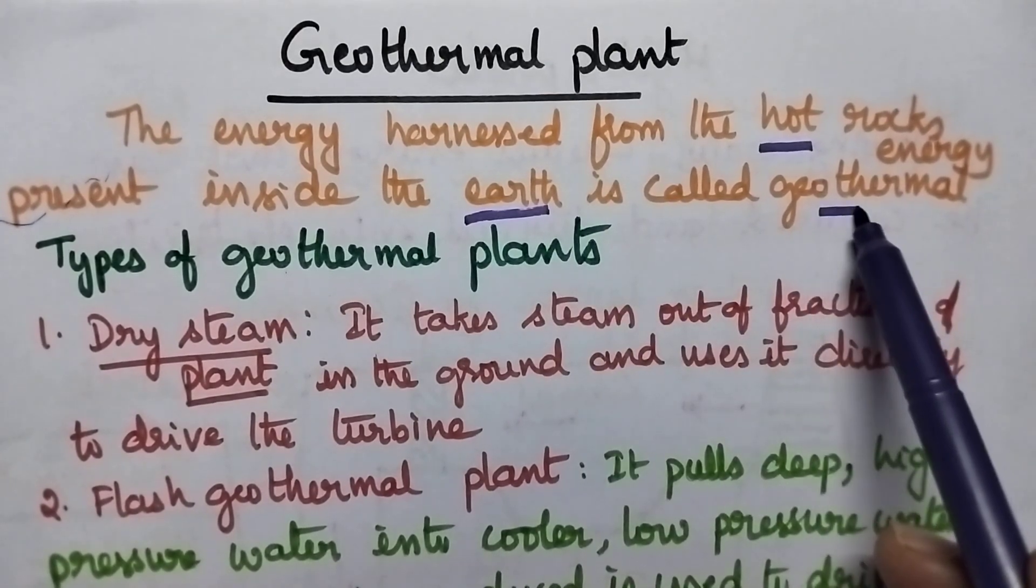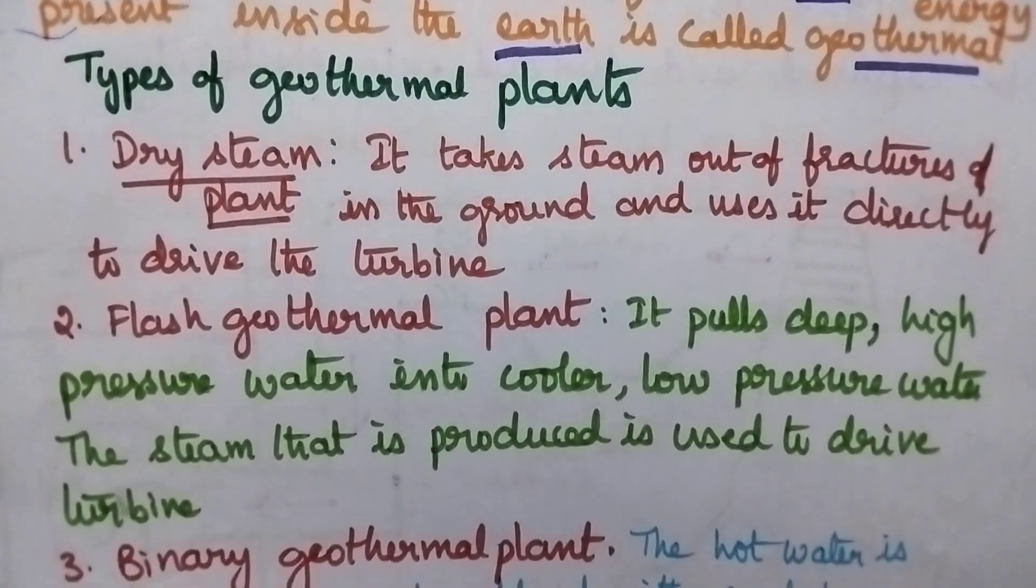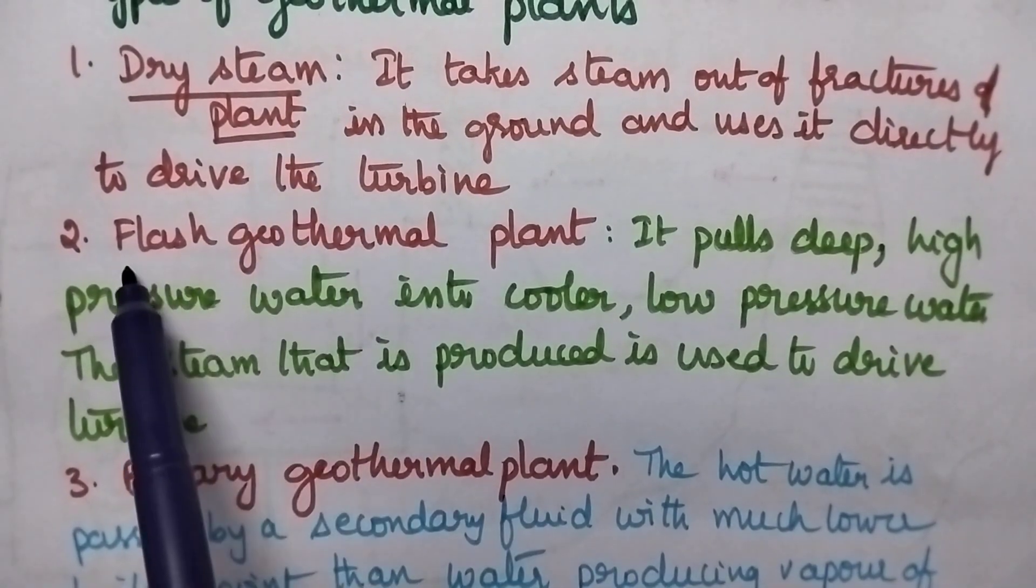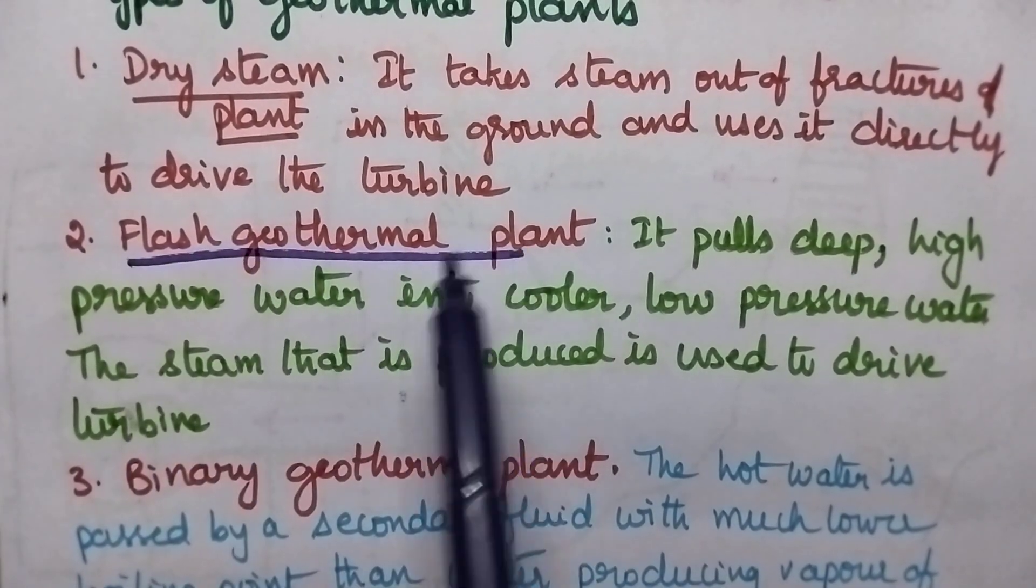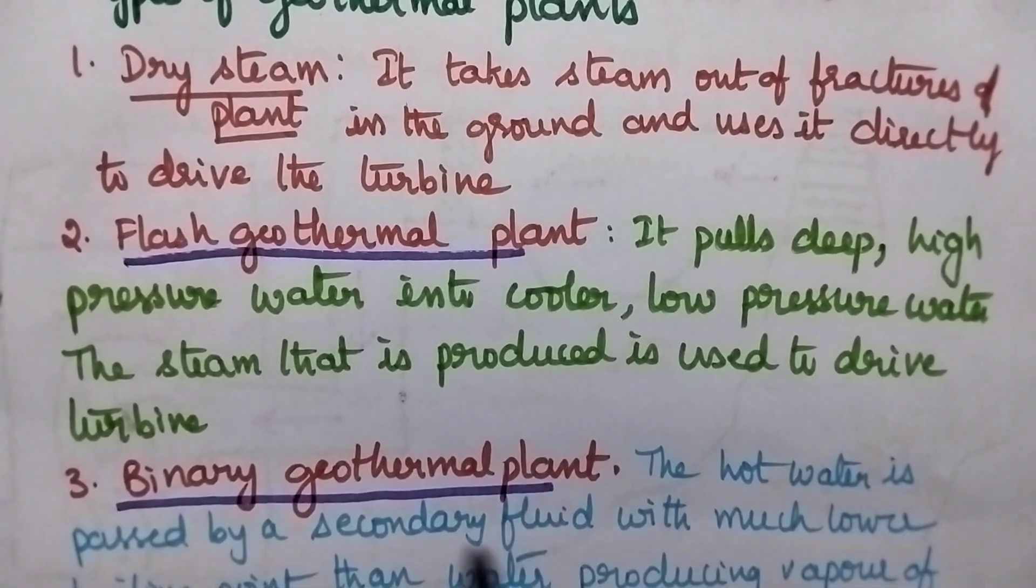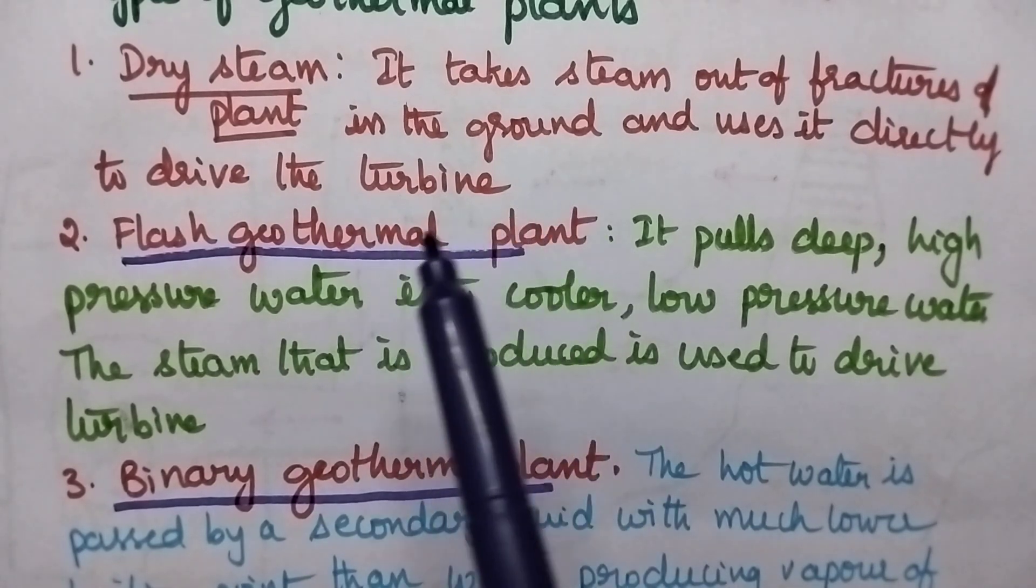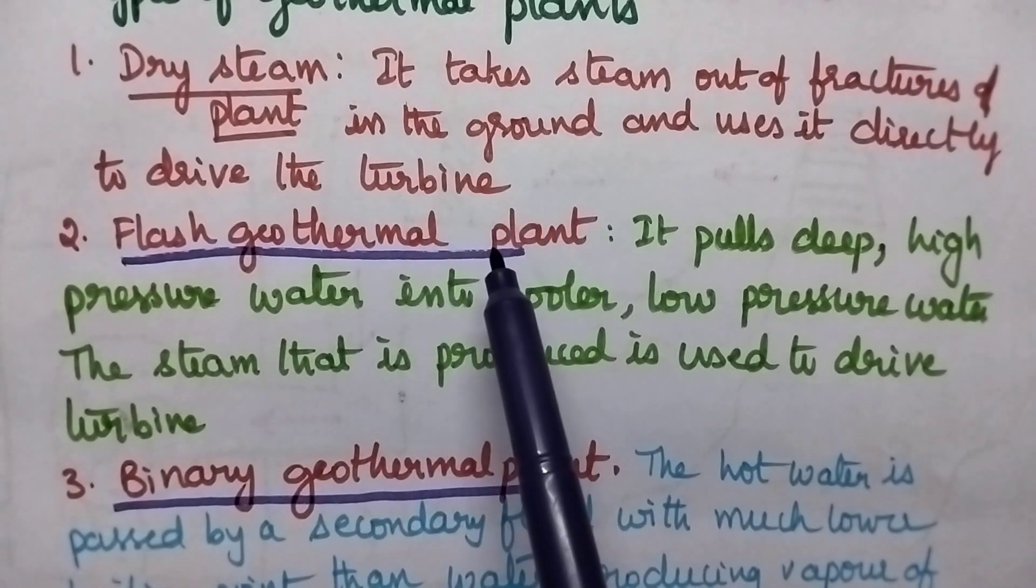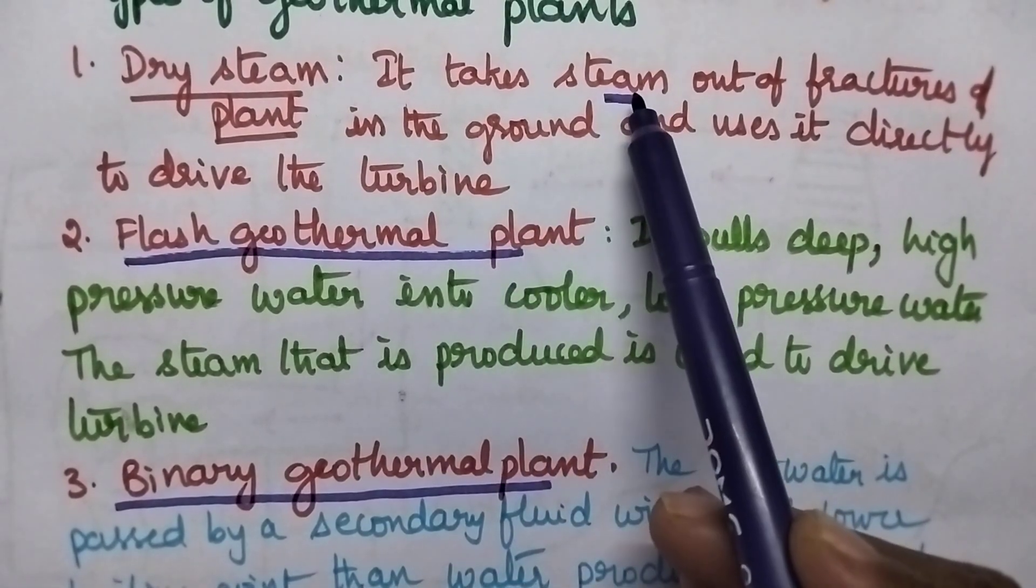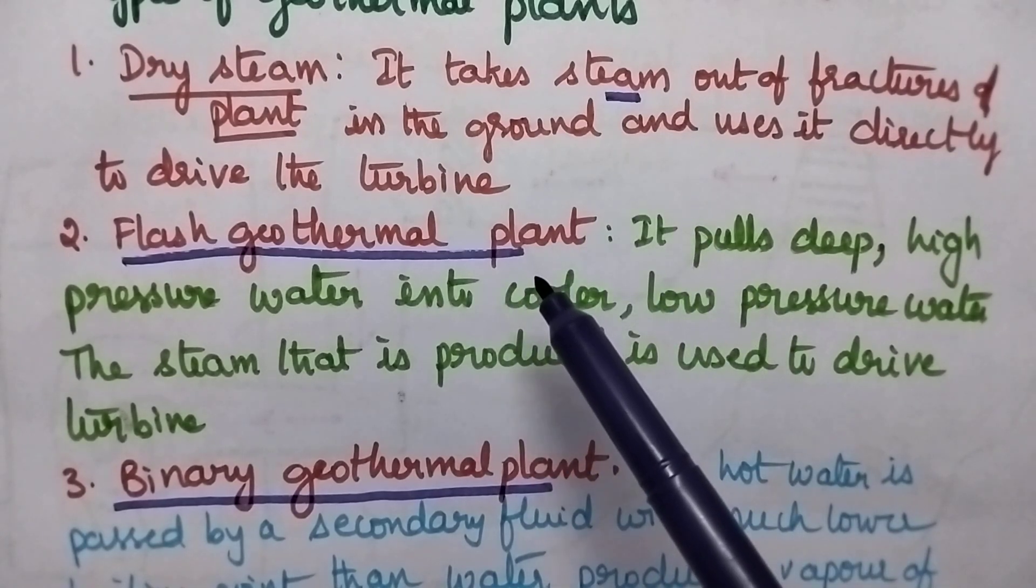There are three types of geothermal plants: dry steam plant, flash geothermal plant, and binary geothermal plant. In a dry steam plant, steam present inside the earth is moved to the surface and directly used to drive the turbine.